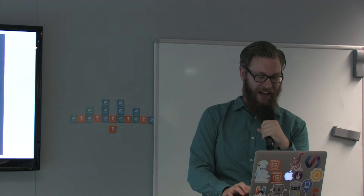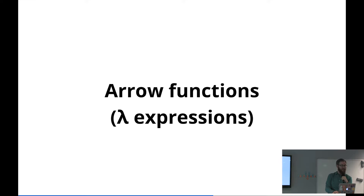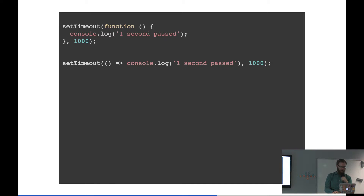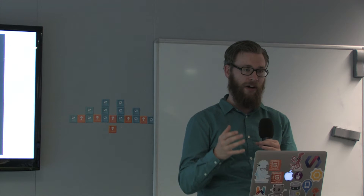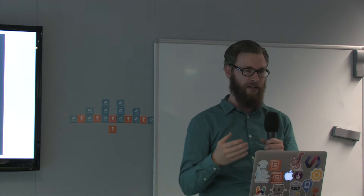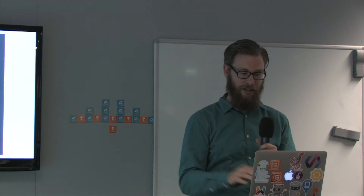Let's continue. Arrow functions — or in a lot of other languages, called lambda expressions. For example, you want to log every second that one second has passed. You have a function within it. One thing about arrow functions, which you can write like this, is you have smaller code. You say: I have no arguments, and then log this. It's a shorter way to write functions — that's the most basic thing you can do with arrow functions.